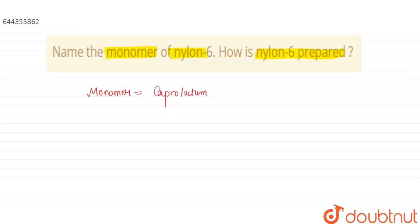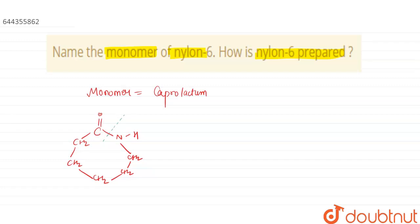Nylon 6 is prepared with the help of caprolactam. The structure of caprolactam is: C double bond O, CH2, CH2, CH2, CH2, NH, CH2, CH2 — a cyclic structure with 6 carbons total (numbered 1 through 6).